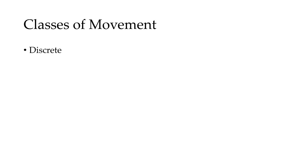There have generally been three classes of movement identified. The first is a discrete task. With a discrete task, there is a definitive start and end as you go from A to B. An example of this would be a vertical jump.